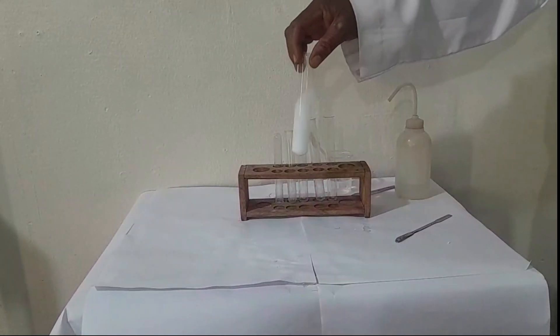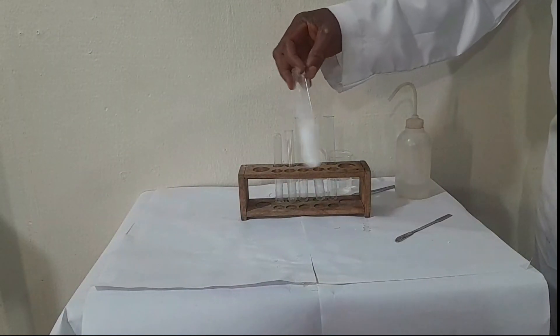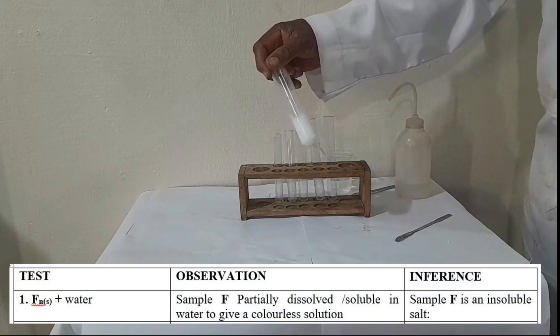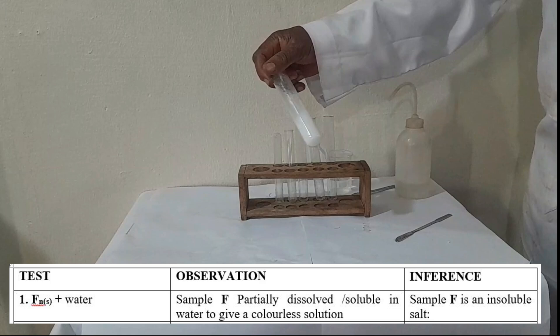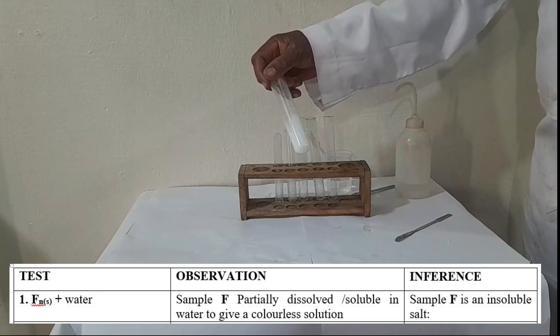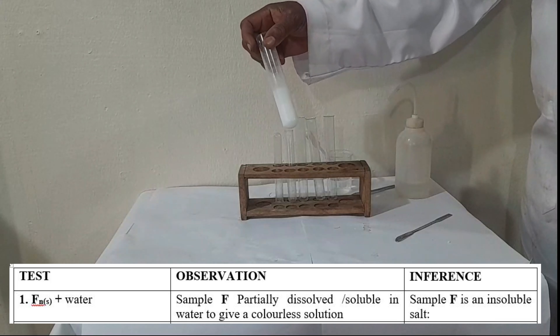In our recording, check quickly what you are observing. FN is an insoluble salt. You can use the word dissolve. Your inference: it's an insoluble salt.